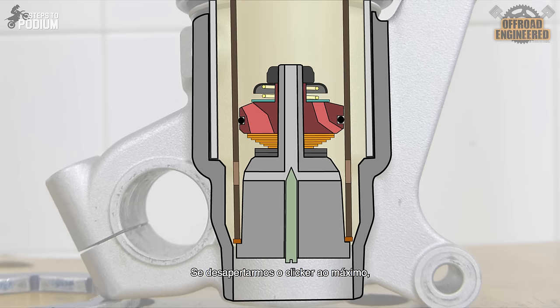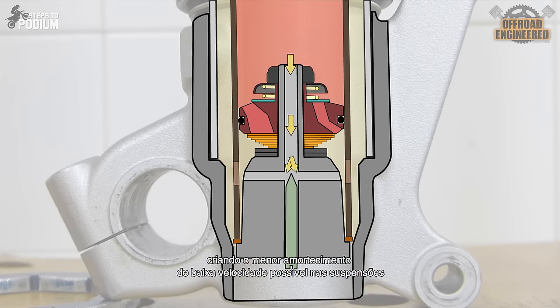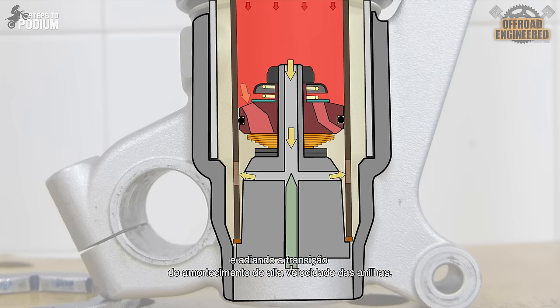If you fully unscrew the clicker, the needle will restrict the oil flow the least possible, creating the least amount of low-speed damping on a fork and delaying, to a small degree, the high-speed damping transition created by the shim stack.